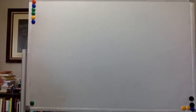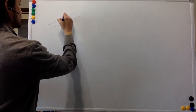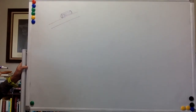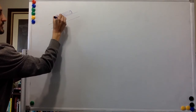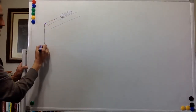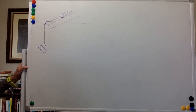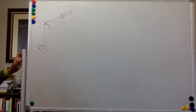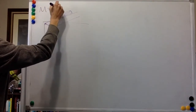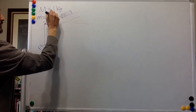We're going to analyze the situation in which a book is going up an incline, being pulled by a rope that goes through a pulley and is attached to a cup. The mass of the book, big M, is one kilogram. The mass of the cup, small m, is 0.5 kilograms.